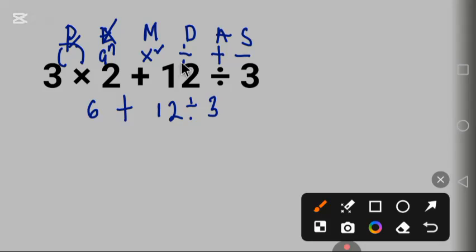Next, division. Is it here? Yes. Let's work division. We have 6 plus 12 divided by 3 is 4. Now 6 plus 4 equal to 10. This is the correct answer.